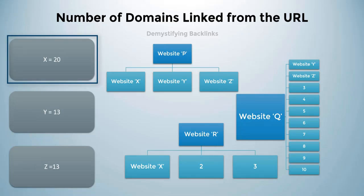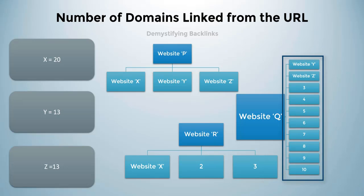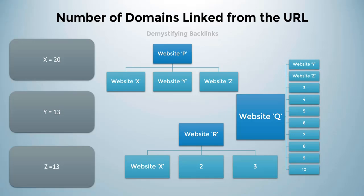Hence, website X will rank higher than Y and Z. This example highly simplifies the concept employed in the actual algorithm to help you understand how the flow of link juice works when more than one link is provided on any given page. With the increase in number of domains linked from the URL, the amount of link juice flowing to your website gets reduced, and hence your search ranking will reduce. Whether the outgoing links target different domains or the same domain, the effect is the same.